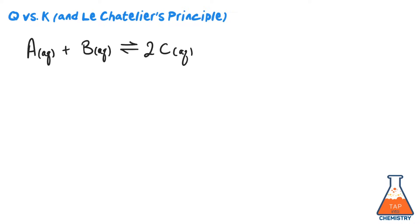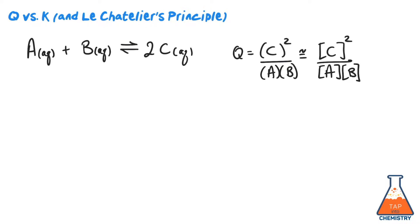Consider the generic equilibrium written. Hit pause and write the expression Q for this equilibrium. If you need help, look in the notes to this video and you'll see a link to our video on the introduction to chemical equilibrium. You'll notice in the expression for Q, the squared is because of the stoichiometric factor 2 in front of the C.